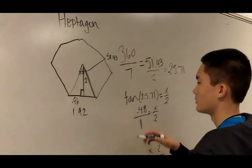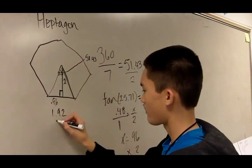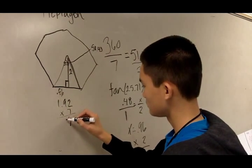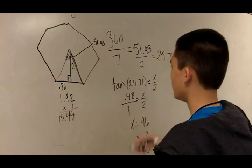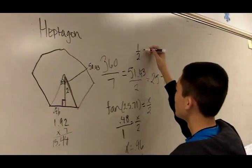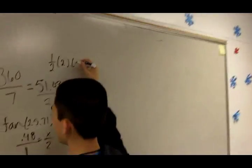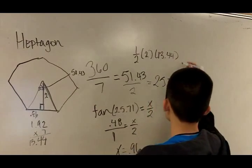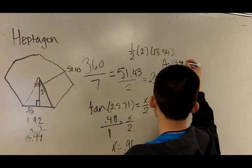And to find the perimeter you multiply it by 7. Which is A equals 13.44.